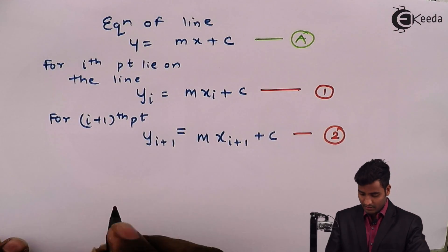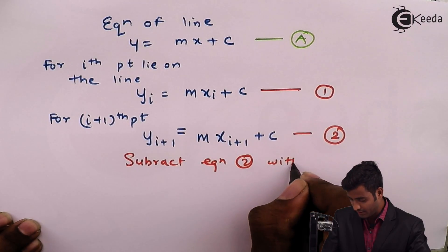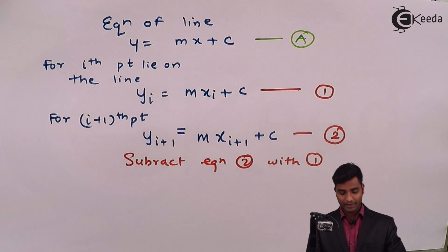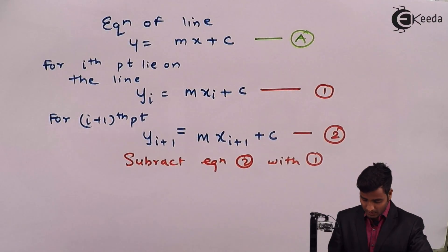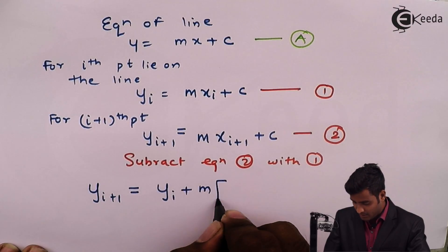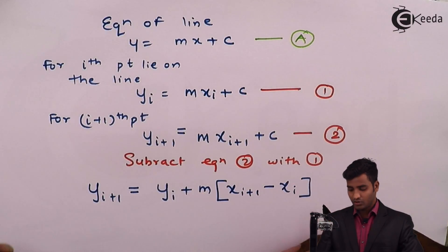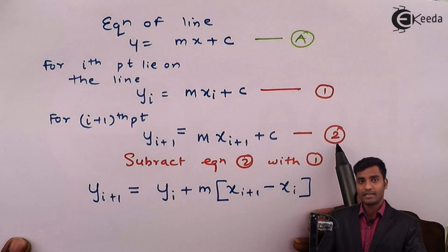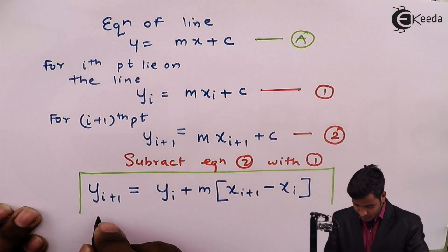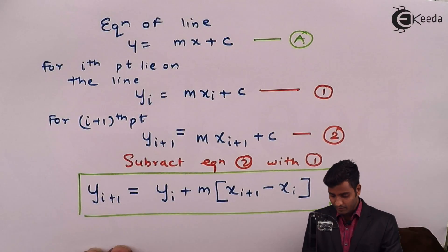Now we will subtract equation 2 from equation 1. After subtracting, the equation becomes yi+1 = yi + m(xi+1 - xi). This result is highlighted in a rectangular block and named equation 3.